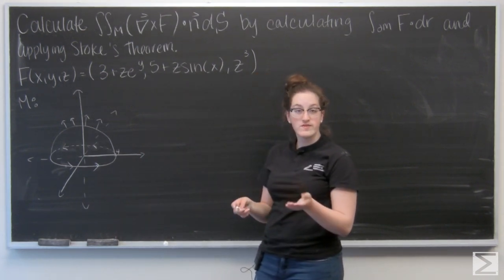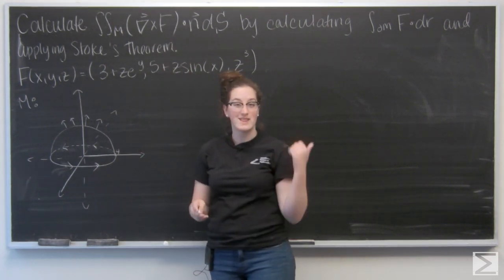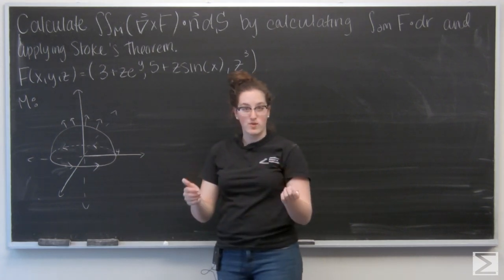Well, Stokes' theorem tells me that if my surface is correctly oriented, the flux of F through M is going to equal that line integral of F around the boundary of M. And I've drawn my orientation in here, but you want to think about the right-hand rule.